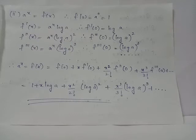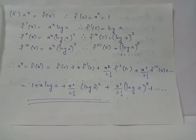The second derivative f''(x) is the derivative of f'(x) = a^x · log(a), where log(a) is a constant. The derivative of a^x is a^x · log(a), so f''(x) = a^x · (log a)². Therefore f''(0) = 1 · (log a)² = (log a)².